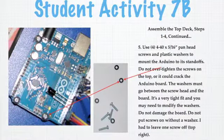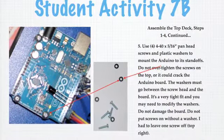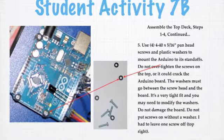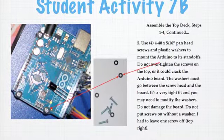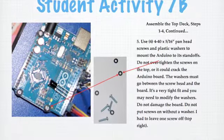Student activity seven B has the students mounting the CPU, which is very important. They need to not tighten it too much, but they also need to use the plastic washers between the screw and the board so it doesn't get damaged.